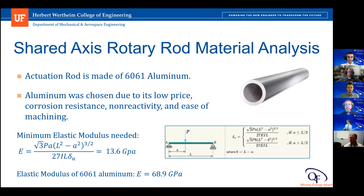The rotary rods of the shared actuation system each support the weight of two reflectors and two independent actuation systems. Material selection was important to minimize beam deflection due to bending forces from the weight of the reflectors and actuation systems, since deflection can negatively impact the solar tracking capability by shifting the angle of the reflector relative to the target tower. We performed a simply supported beam deflection analysis, setting deflection to a maximum allowable value and solving for the required elastic modulus. Aluminum was selected over other materials with similar elastic moduli due to its relatively low cost, corrosion resistance, non-reactivity, and ease of machining. The elastic modulus of aluminum exceeded the minimum needed by about 50 gigapascals, with a safety factor of 5.